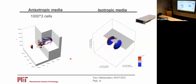Now you can see essentially the same simulations but using three-dimensional models. It corresponds to an isotropic response, and on the right you can see an anisotropic response of a sandstone.